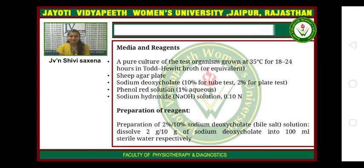Preparation of reagent: To prepare the 2% and 10% sodium deoxycholate bile salt solutions, dissolve 2 grams or 10 grams of sodium deoxycholate into 100 mL of sterile distilled water respectively.